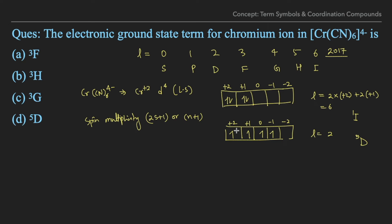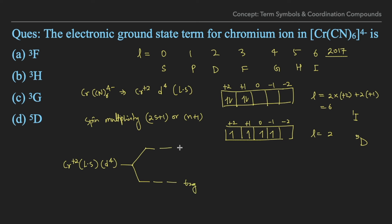So the correct way: the question asks for the ground state term of the chromium ion inside this complex, which is octahedral in geometry. That means we must use crystal field splitting. Chromium in +2 is a d⁴ system; in an octahedral field it splits into t₂g and eɡ orbitals. Filling four electrons in the low-spin state: the first three go into t₂g (one each), and the fourth electron is also placed in t₂g, pairing up.